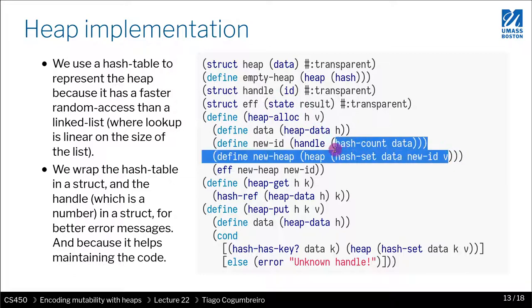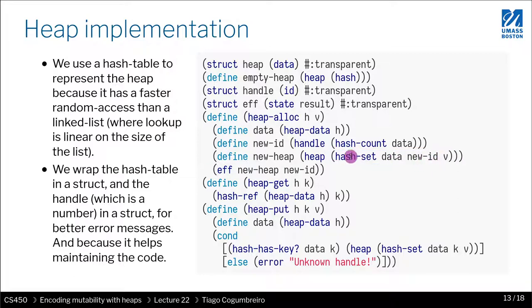So we just add a new pair, new ID to V, in the hash table data, and we wrap it in a heap.